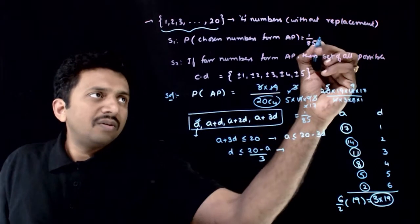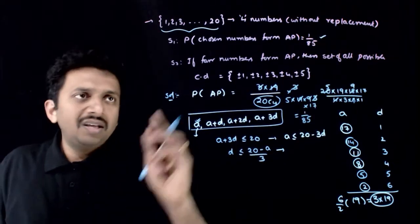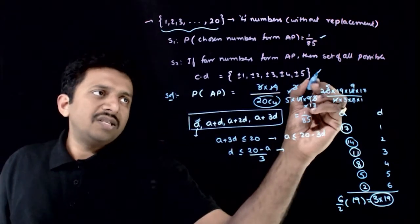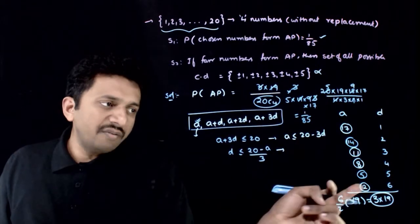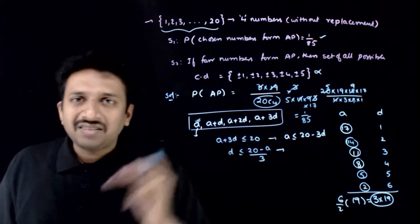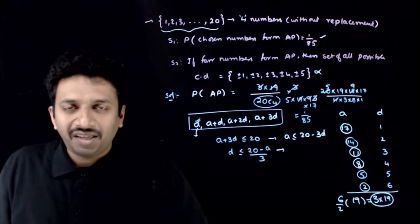So Statement 1 is true. Statement 2 is obviously false because a common difference of ±6 is also possible. Thank you.